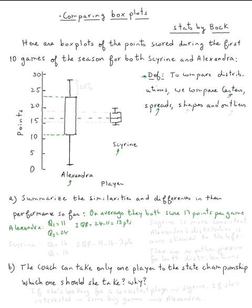Now for Schyrene, let's see, the Q1 is about fifteen and a half, or sixteen. And the Q3 is about nineteen. So the IQR will be equal to nineteen minus sixteen, which is three points.